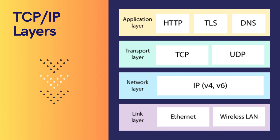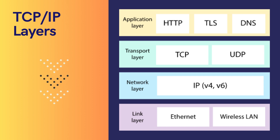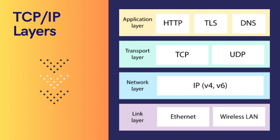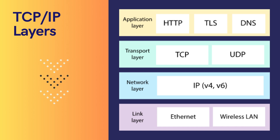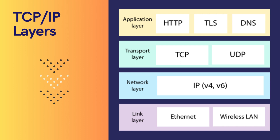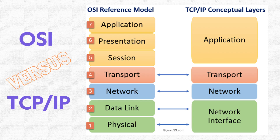When comparing the four-layer TCP/IP protocol with the seven-layer OSI model, this is how they align side by side. TCP/IP's application layer contains all the duties of layers five to seven in the OSI model — those are the application, presentation, and session layers.